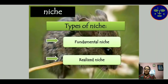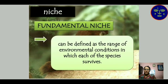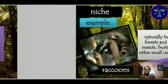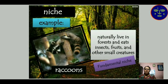There are two types of niche: fundamental niche and realized niche. Fundamental niche can be defined as the range of environmental conditions in which each species survives. The particular environment in which a species is living is known as its fundamental niche. For example, a raccoon lives in a forest and eats insects, fruits, and other small creatures — this is known as its fundamental niche.